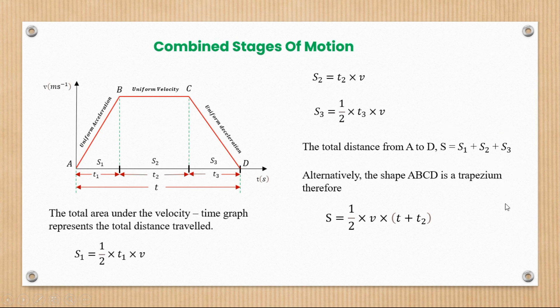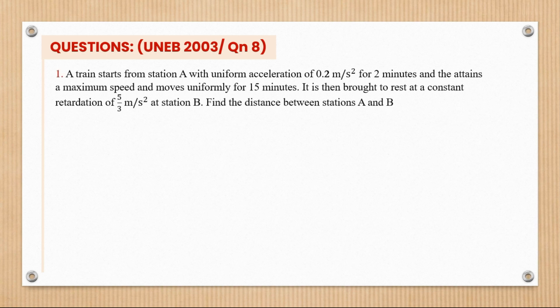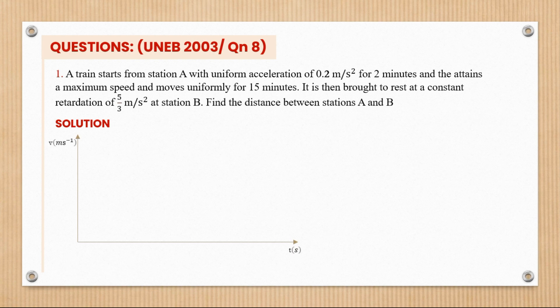Question from 2003, number 8: A train starts from station A with uniform acceleration of 0.2 m/s² for 2 minutes until it attains maximum speed, then moves uniformly for 15 minutes, then is brought to rest at constant retardation of 5/3 m/s² at station B. Find the distance between stations A and B. We sketch the velocity-time graph with axes for velocity and time, showing uniform acceleration from A.